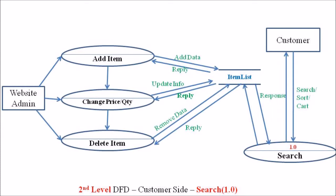The item list data store is updated by the website admin through those three independent processes. On the customer side, the customer can search the data on the website using the search process, and this search process is linked to the item list data store. The customer can search or sort different products available on the web portal, and all individual product data are stored in the item list data store. This completes the level 2 DFD for the search process at the customer site.